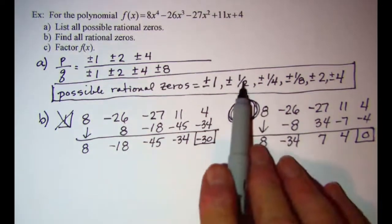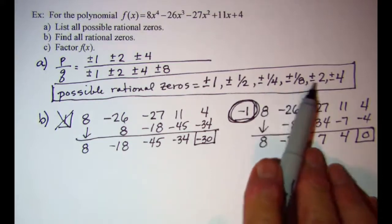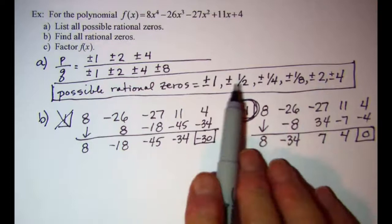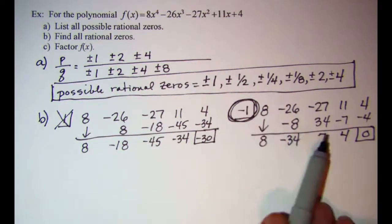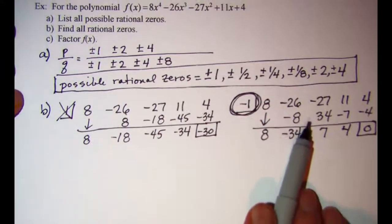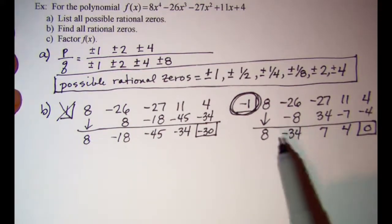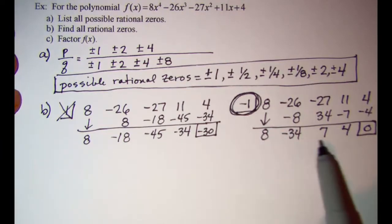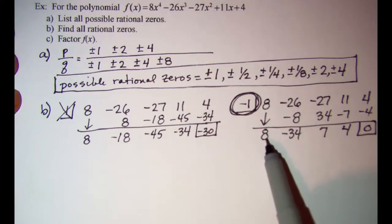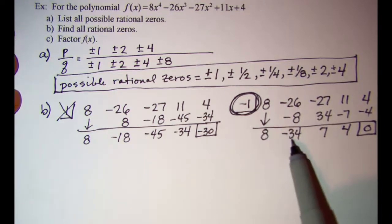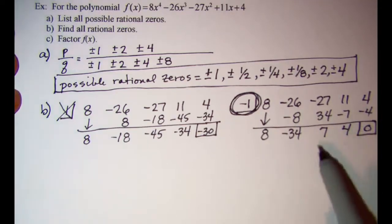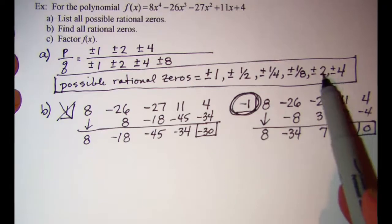I'm going to wait on the fractions and do the whole numbers first — it's easier to do synthetic division with whole numbers if possible. We only need to use this new reduced function 8x³ - 34x² + 7x + 4. So my next one to try is positive 2.